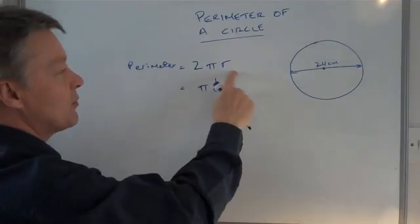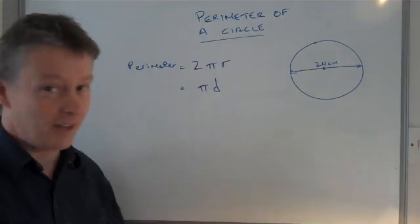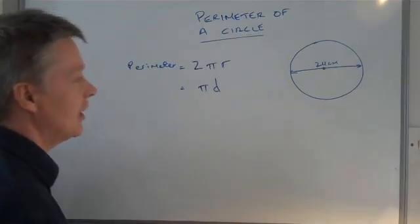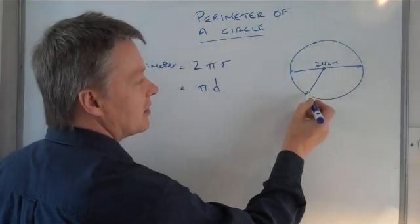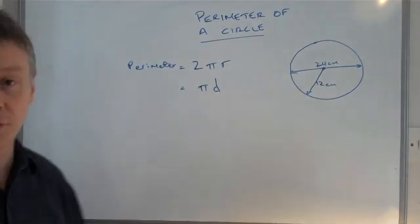Okay, so some people remember it this way, I do. Some people remember it that way, that's absolutely fine. Okay, the radius of this particular circle is 12 centimeters because the diameter is 24.